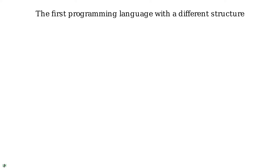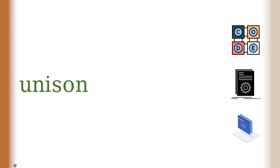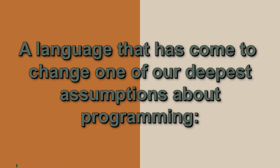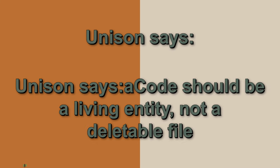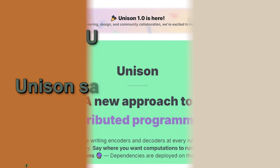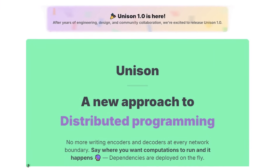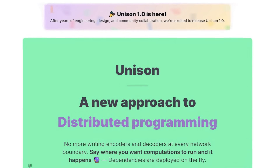The first programming language with a different structure in building and compiling code — this is not an advertising slogan. It is the exact definition of the Unison language, a language that has come to change one of our deepest assumptions about programming. Code is just a text file. Unison says code should be a living entity, not a deletable file. And this single sentence defines the entire philosophy of this language.